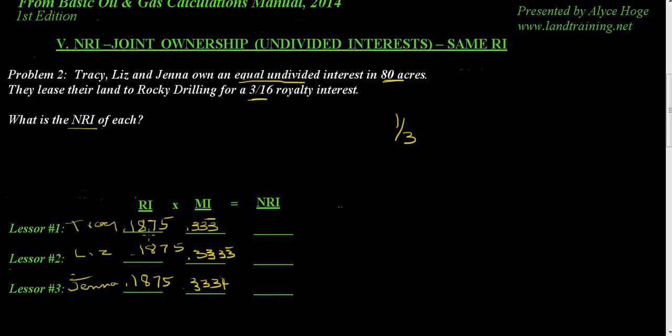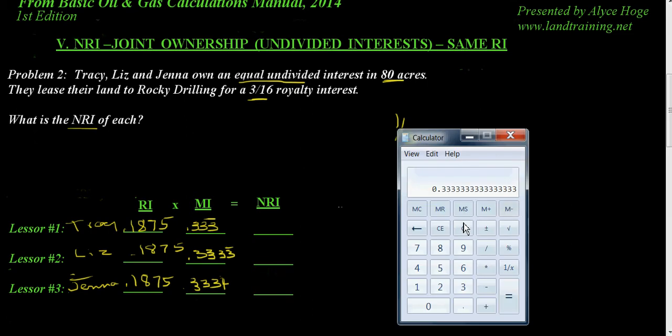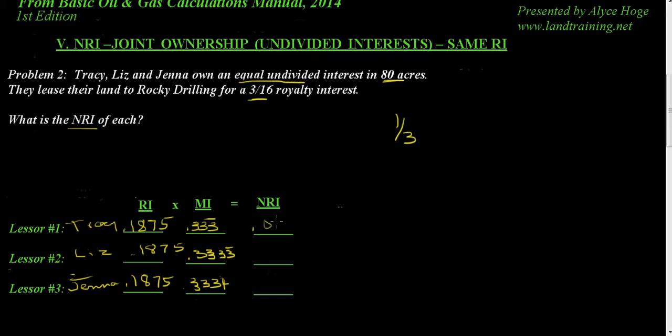So we're going to take that three-sixteenth and multiply it by that one-third, and that's going to give us our net revenue interest. I'm going to multiply the one-third by this three-sixteenth, 0.1875, and that's going to give me a decimal or net revenue interest of 0.0625, or maybe 0.0626.